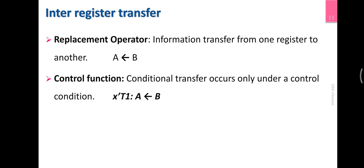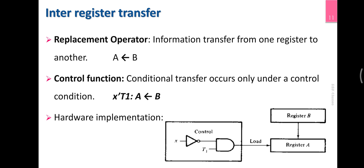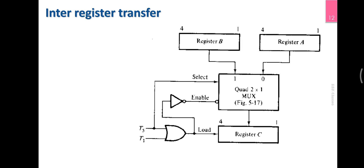There are three conditions: x=1, T0=0; x=1, T1=1; and x=0, T1=1. Then x̄·T1 condition is satisfied when x=0 and T1=1. This is how to apply hardware implementation: with register A and B content, we apply a load to register A. Load is active when x̄·T condition is met. Load is the instruction for register B.